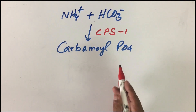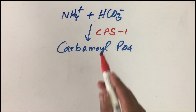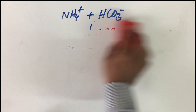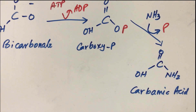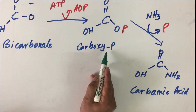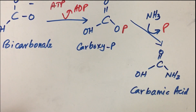Carbamoyl phosphate synthetase is an allosteric enzyme — we will look at its regulation later. It requires two ATP molecules, making this an energy-driven process. The enzyme has three active sites, and let us see how this reaction is catalyzed in the mitochondrial matrix.